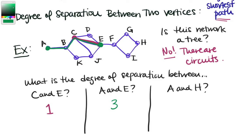Now we want the degree of separation between A and H. We know the shortest way through the left part is A to B to C to E — there's no shorter route. Then there's only one option to go over to F. From F, there are two options to reach H, but both add the same number of edges. So counting one, two, three, four, five, six — the degree of separation between A and H is six.